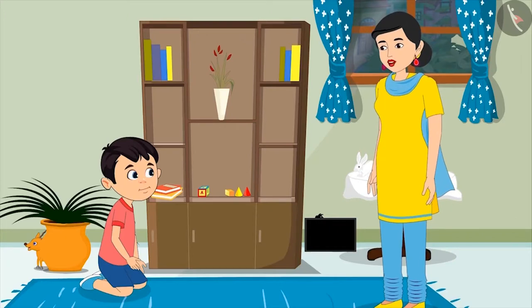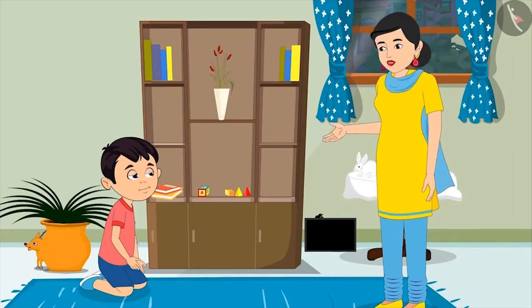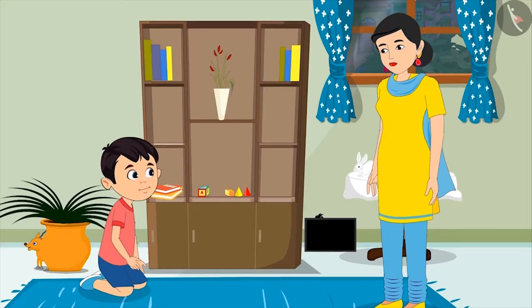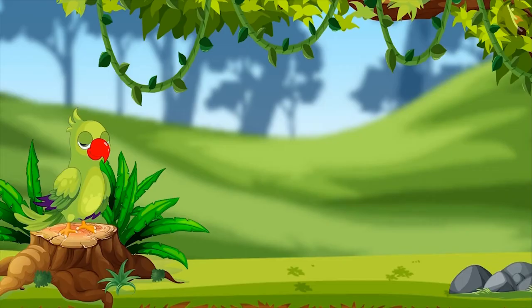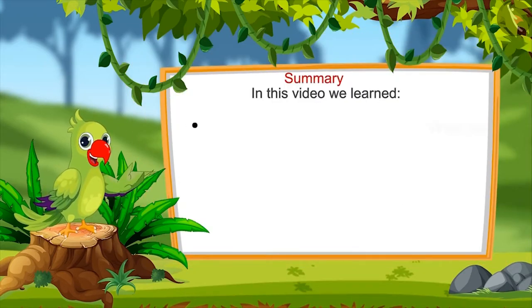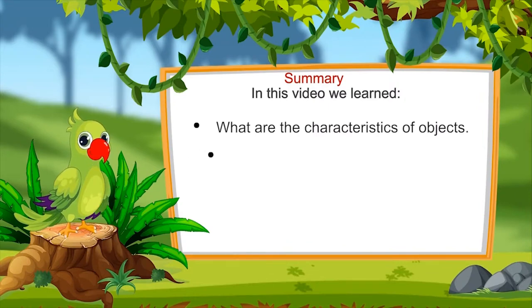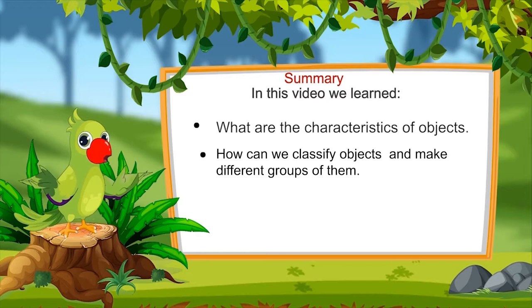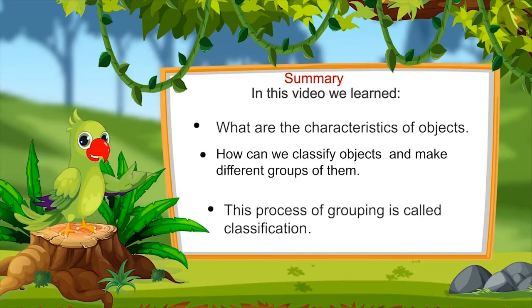Come on, it's night now and you should go to sleep. Quickly put these toys back and go to sleep. Okay, mom. I had a lot of fun today. We will play again tomorrow. Sure, son — now go to sleep. Good night. That's all for today. In this video, we have learned what are the characteristics of objects, how we can classify objects and make different groups of them, and that this process of creating different groups is called classification.